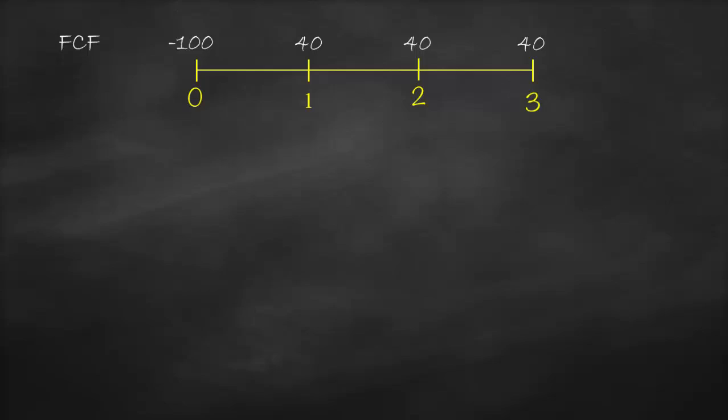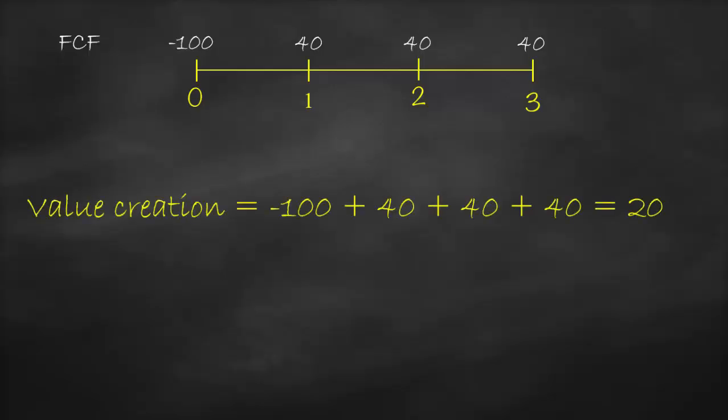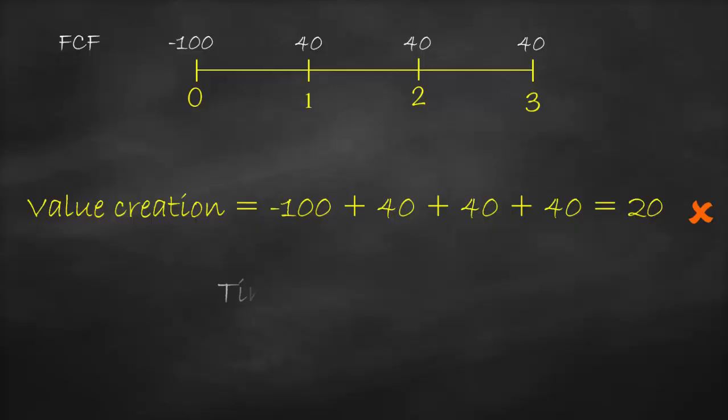So what do you think — should you make this project? Will it be profitable? One approach would be to sum all the cash flows: negative 100 plus 40 plus 40 plus 40 gives us 20 million, which is a positive number, so we accept the project. But is this correct? Definitely not — because you forgot the time value of money.